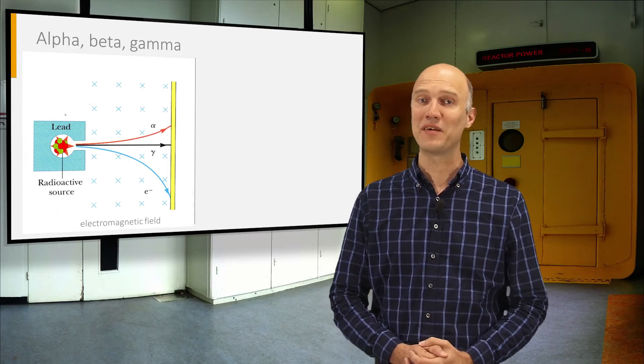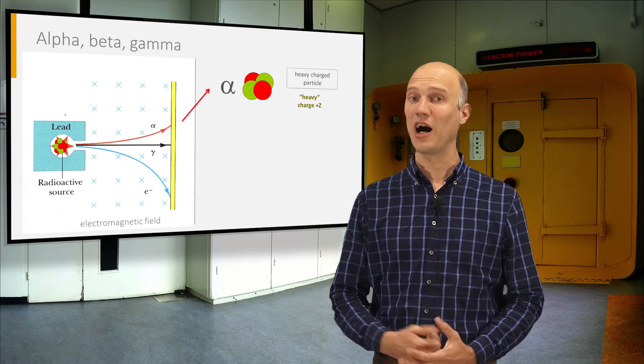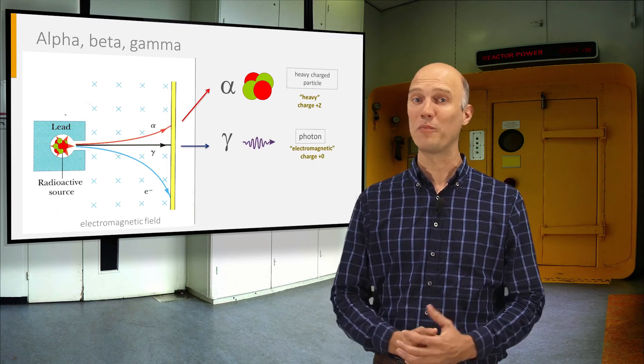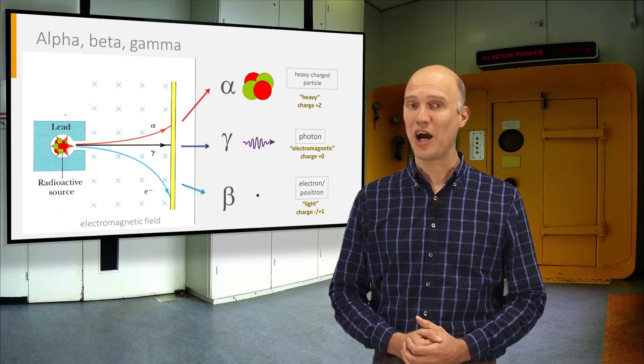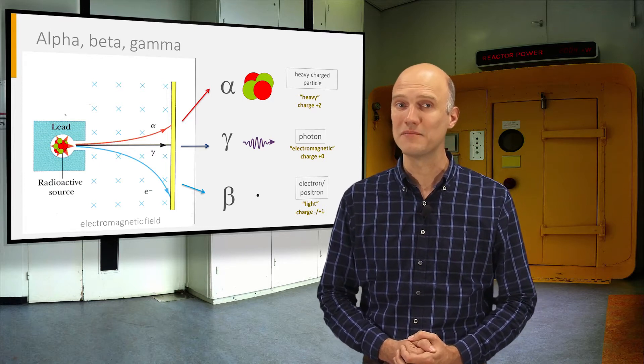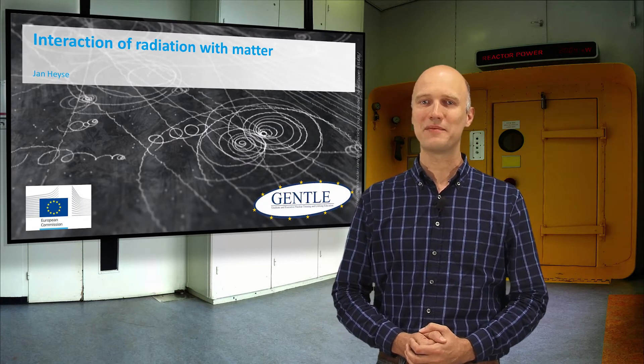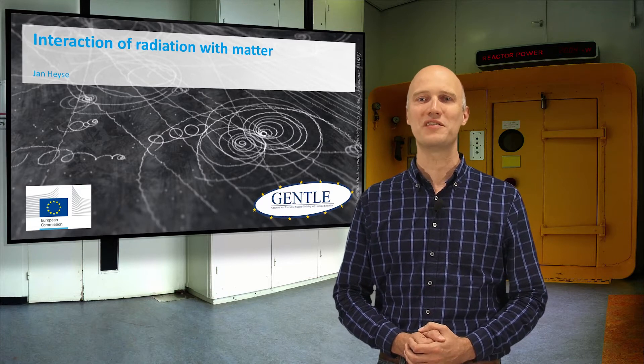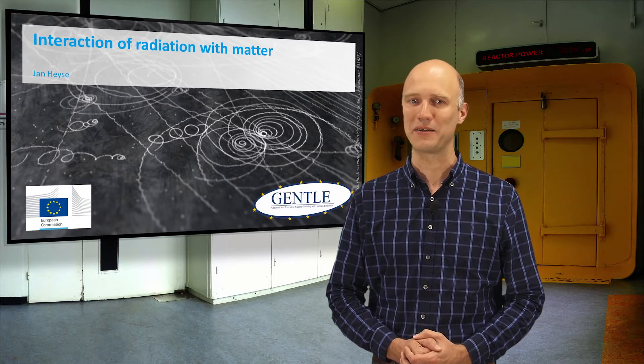A radioactive source can emit different types of radiation, such as alpha particles, gammas, or beta particles. The question now is, what will happen when these particles pass through matter? My name is Jan Heysen, and in this video we will discuss the interaction of radiation with matter.